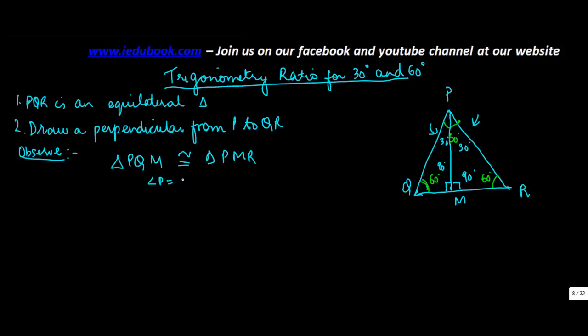Angle QPM is equal to angle RPM. Angle QMP is equal to angle RMP. And angle Q is equal to angle R. So all three angles are equal. Therefore, we conclude that these two triangles are congruent.